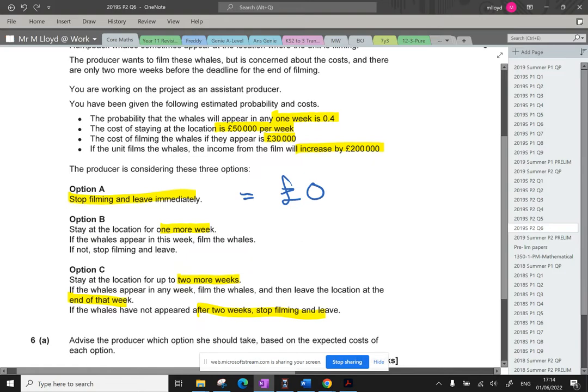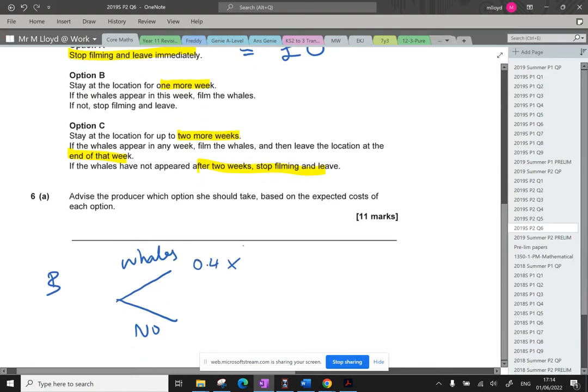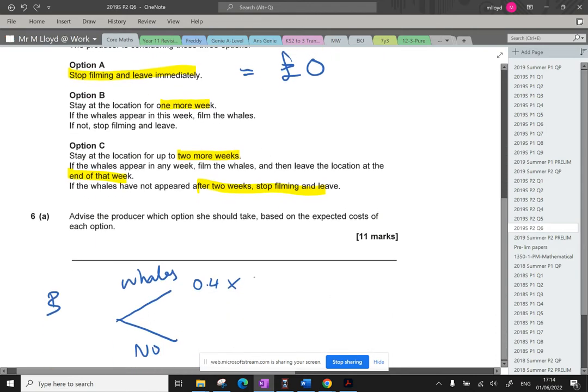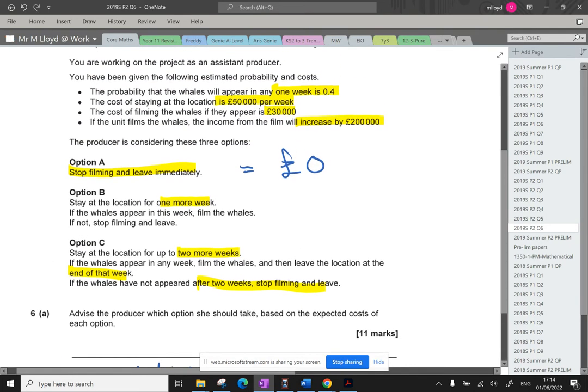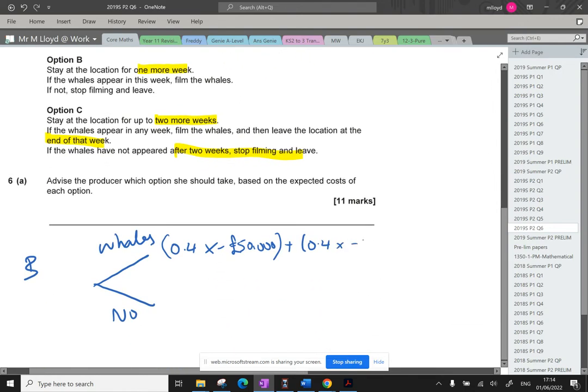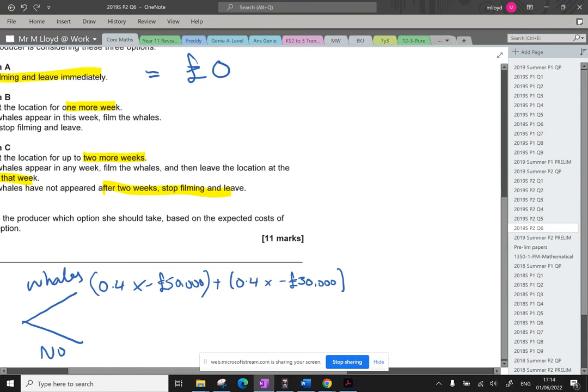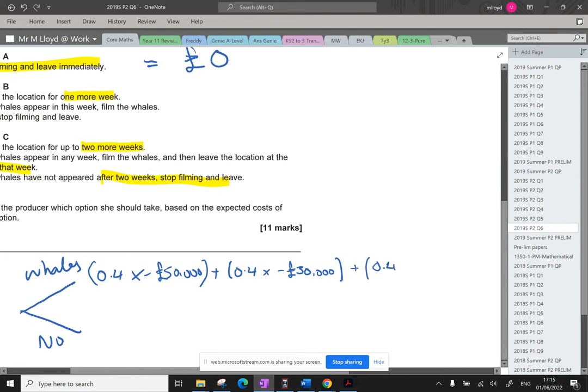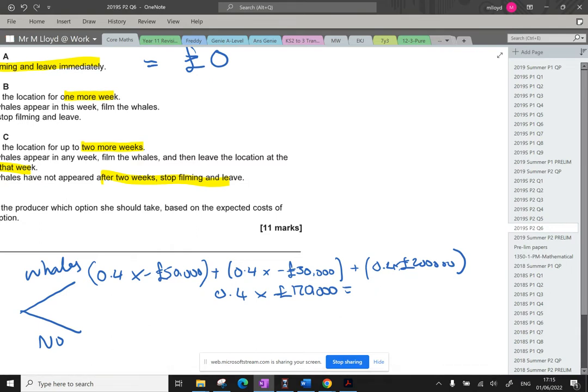If the whales appear, and this is a 0.4 probability, it's going to cost them £50,000. I'm going to do negative £50,000 so we can see that as a cost. Plus the cost of filming the whales, that's going to be negative £30,000. And they're going to get £200,000 for this. So plus 0.4 of the £200,000. I'm just realizing I could have just worked out the total cost benefit and multiplied it by 0.4. So let's do 0.4 times by £120,000, which gives us £48,000. We're not finished yet though.